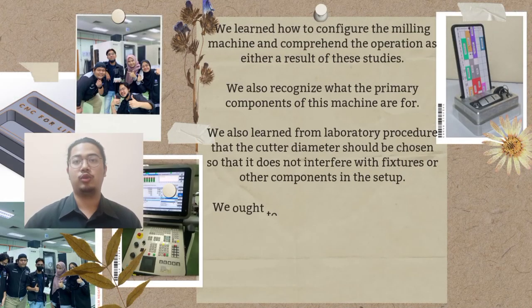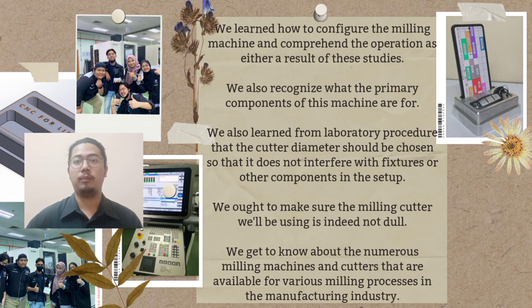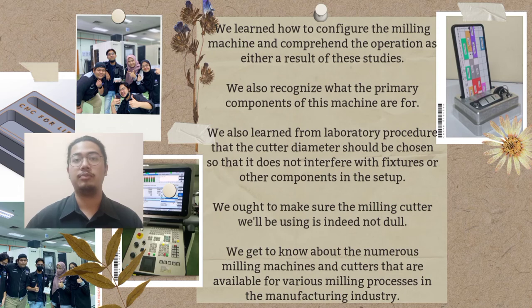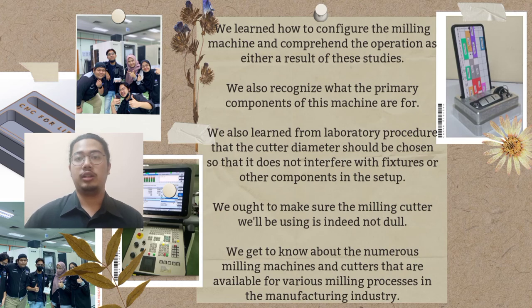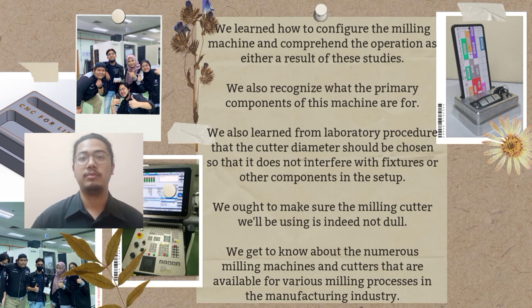We learned how to configure the milling machine and comprehend the operation as a result of these studies. We also recognized what the primary components of this machine are for. We learned from the laboratory procedure that the cutter diameter should be chosen so that it does not interfere with features or other components in the setup. Before we start the operation, we make sure the milling cutter being used is not dull. The laboratory activities also taught us about the numerous milling machines and cutters available for various milling processes in the manufacturing industry.